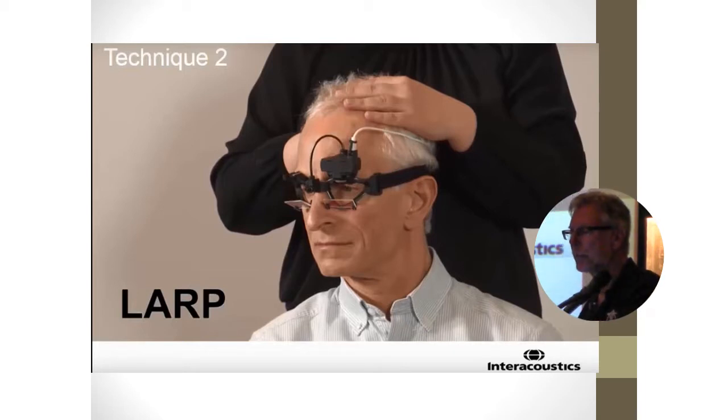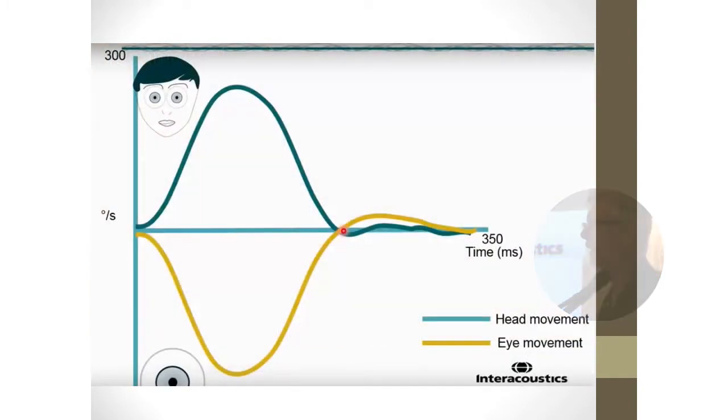And so once you develop the ability to do these, then this is a quick and easy test. And it's very comprehensive because we're talking about all six canals rather than one canal, right? And that's what you would do when you did a caloric test, just a lateral canal.